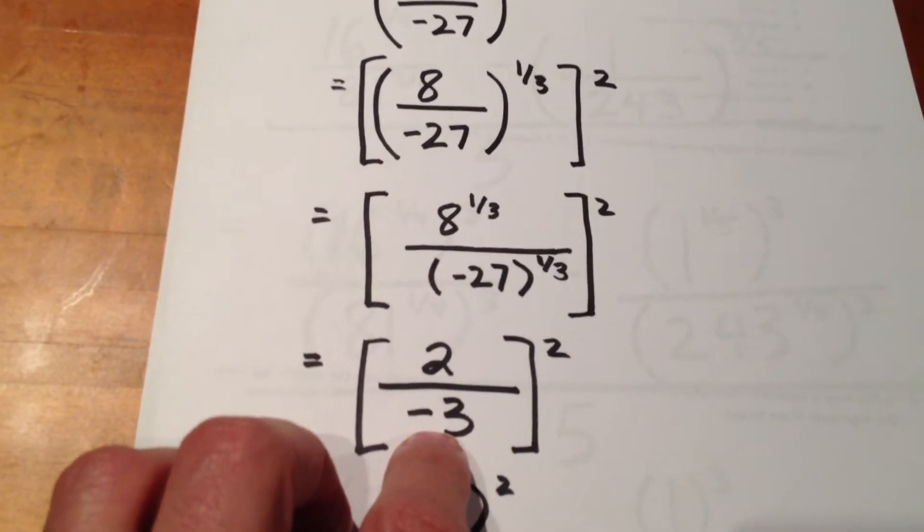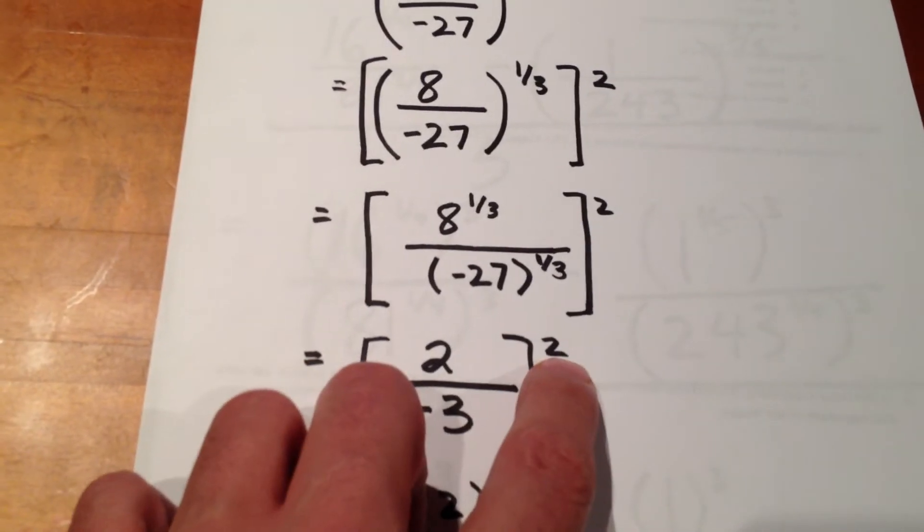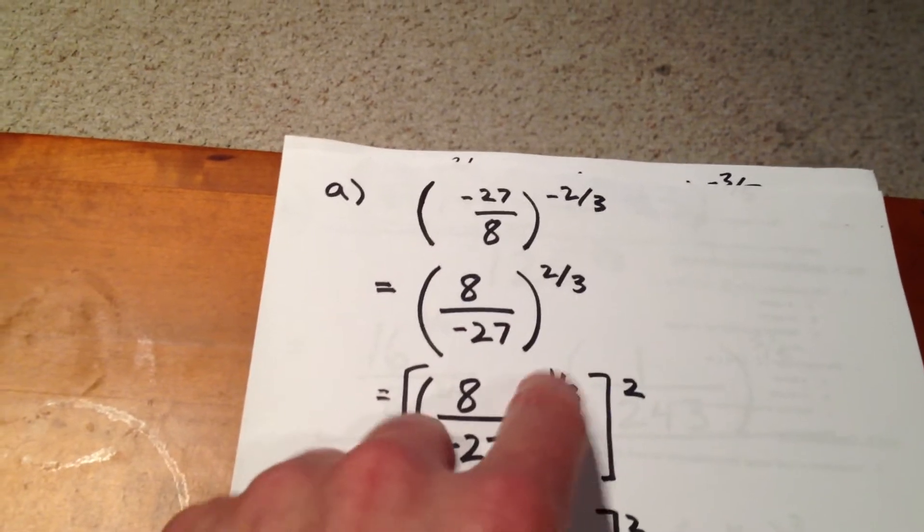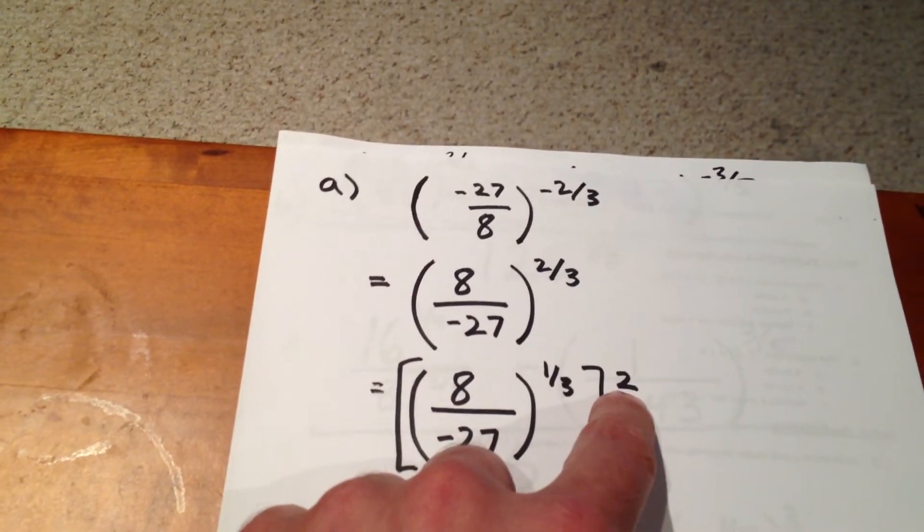Well, now we're in a position to square the result, because we recognized at the start, when we were finding the third root, we were ultimately going to have to square it.